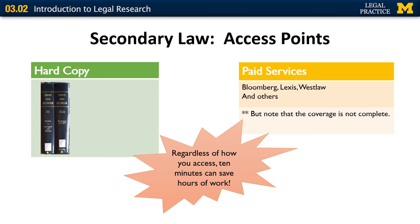There are two main access points for these secondary sources. The first is a hard copy version from the library, and the second is through the paid services — things like Bloomberg, Lexis, Westlaw, and several others. One thing to keep in mind is that the paid services, while great for general encyclopedias like CJS and AMJUR, only have about a dozen state encyclopedias, so for those you're going to have to resort to hard copy.